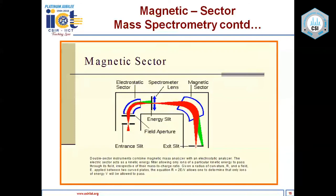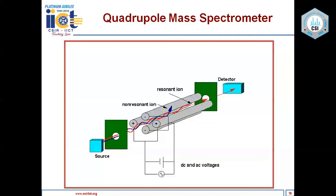Single focusing mass spectrometers have limitations particularly with respect to resolution. To overcome this, an electrostatic sector is placed either before or after the magnetic sector — called conventional or reverse geometry — forming a double focusing mass spectrometer. The electrostatic sector acts as an energy filter, allowing only ions of the same kinetic energy to pass through, imparting high resolution to the mass spectrometer.